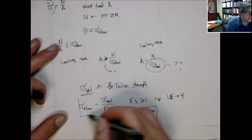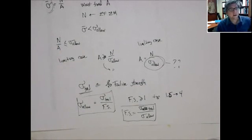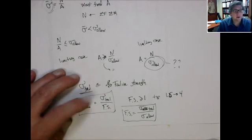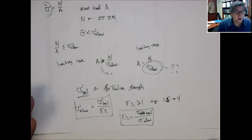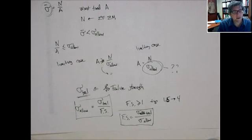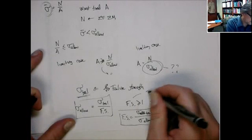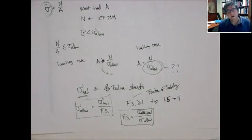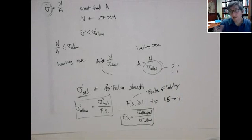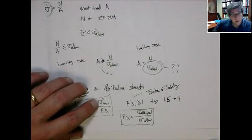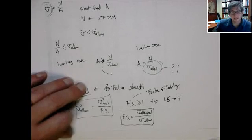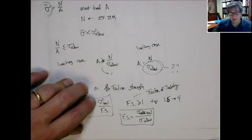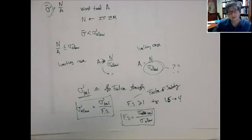So instead of using the failure strength, we use the allowable strength, which equals the failure strength divided by some factor of safety. This factor of safety is always greater than 1. Typical values are 1.5 and even as high as 4. This means the allowable stress is less than the failure strength — you're intentionally designing to a lower allowable stress. Think about the concept: if the factor of safety is greater than 1, the allowable stress has to be less than the failure stress. Don't mix it up — failure stress divided by factor of safety, not multiplied.